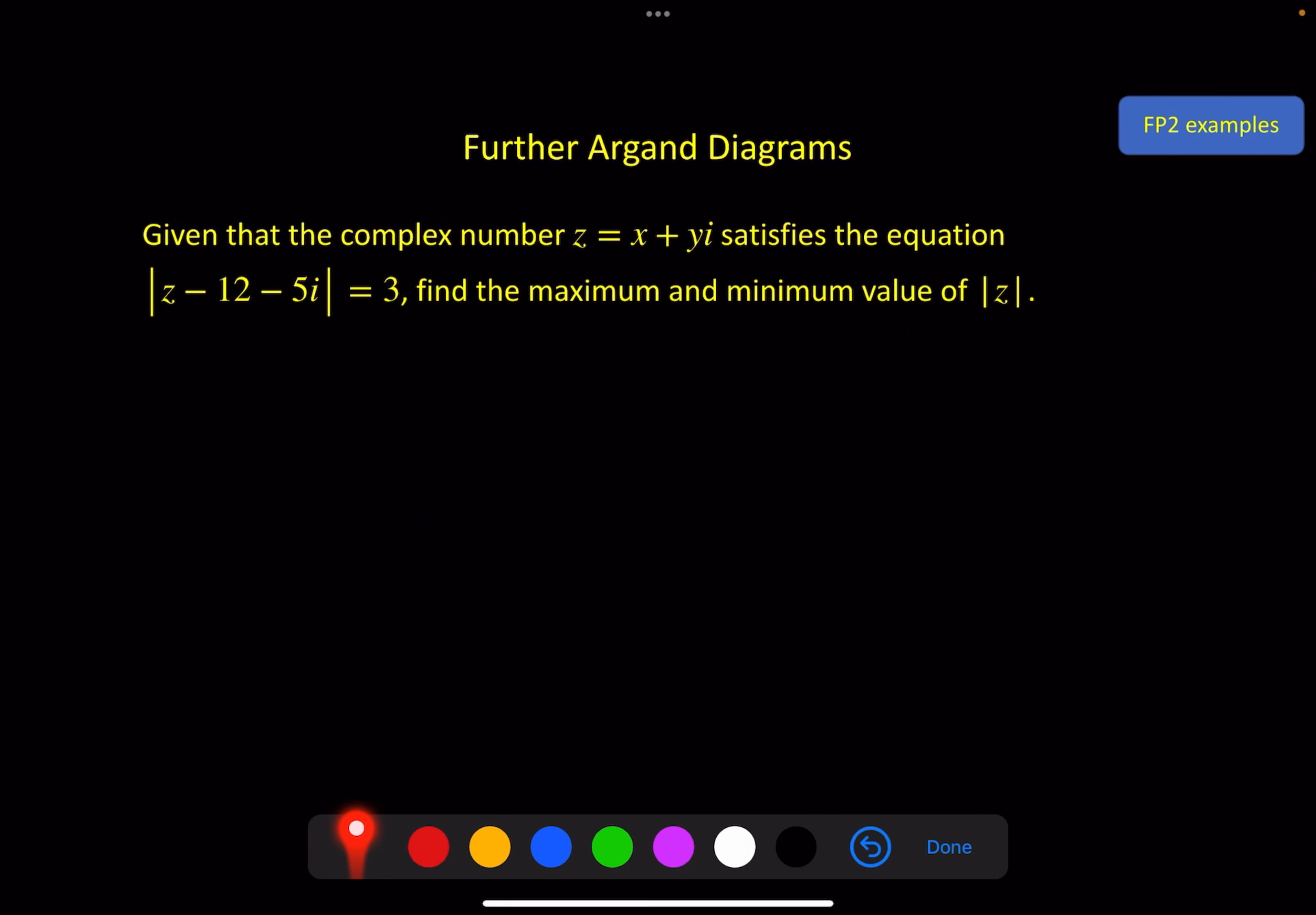Third example. Same again, we've got another circle here. Given that the complex number z satisfies the equation |z - 12 - 5i| = 3, find the maximum and minimum values of the modulus of z. Okay, we're all about the Argand diagram here, so let me make this quite big. Our center point is 12 + 5i here, and again we have a radius of 3, so it will come down to 2 here, it'll go up to 8 here, it will come down to 9 here, and go up to 15 over here. It's not really very accurate, but it gives me an idea of what's going on. Something like this.